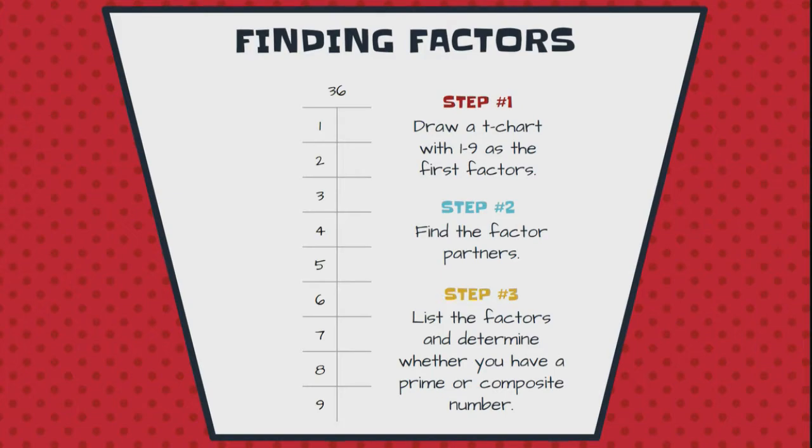So, let's do another one with thirty-six. A little bit bigger. So, step one, do a T-chart with one through nine. Check. Find the factor partners. We'll do that here in a second. And then, we'll list the factors. All right. One times what is thirty-six? Thirty-six. That one's easy. Two times, we'd have to count up. Two, four, six, eight, et cetera, et cetera. We'd hit thirty-six. Eventually, that's eighteen.